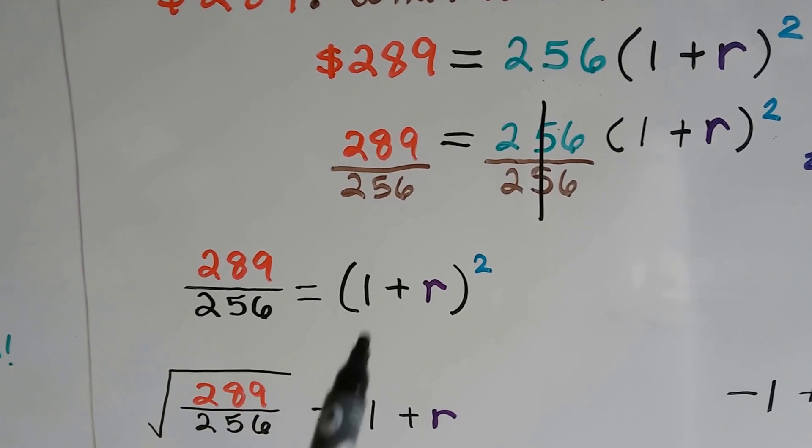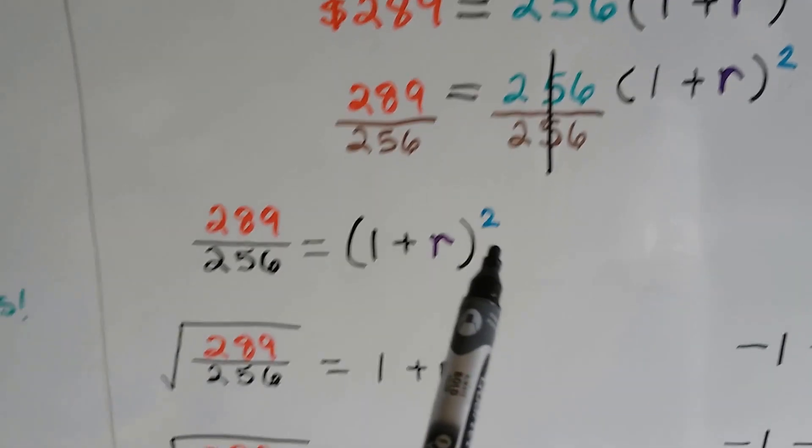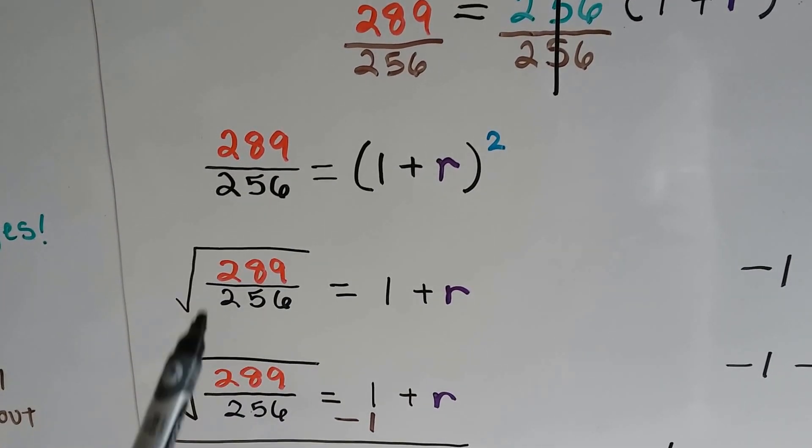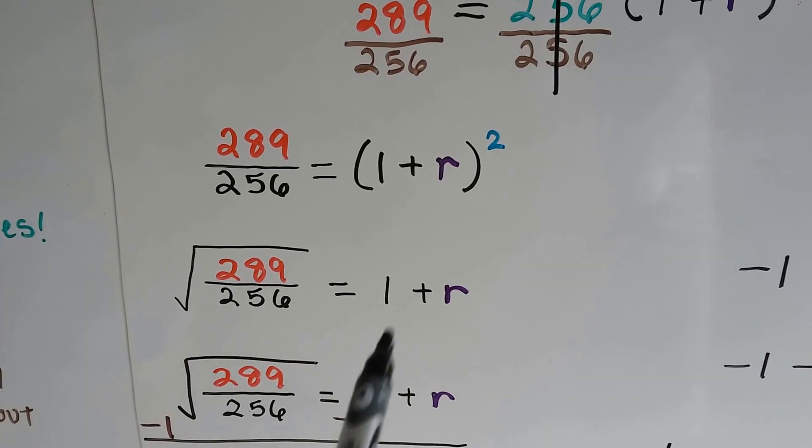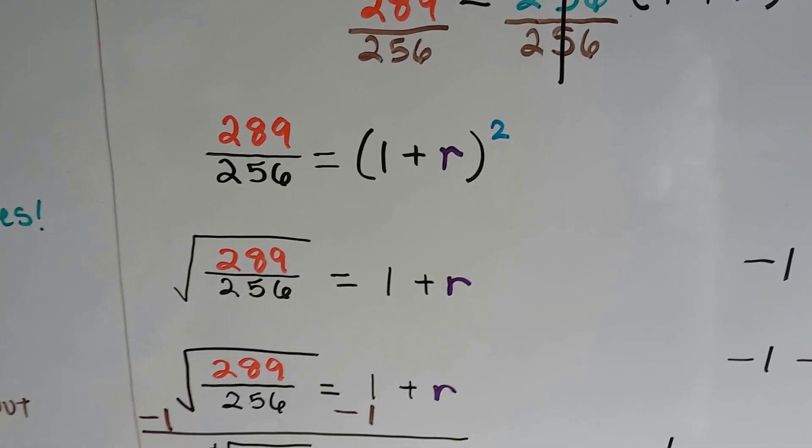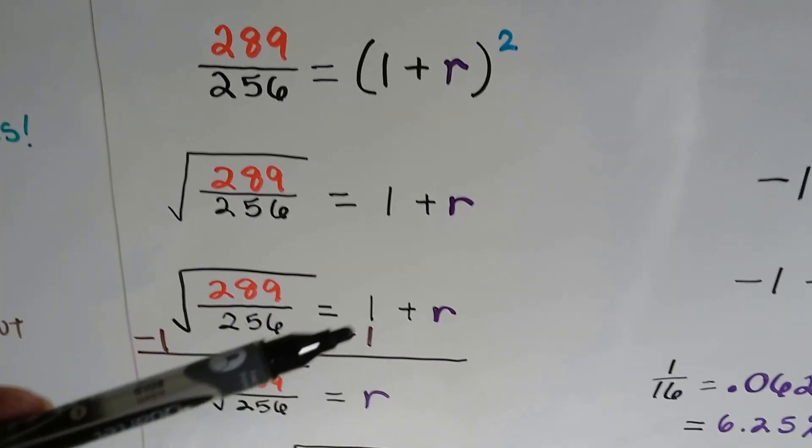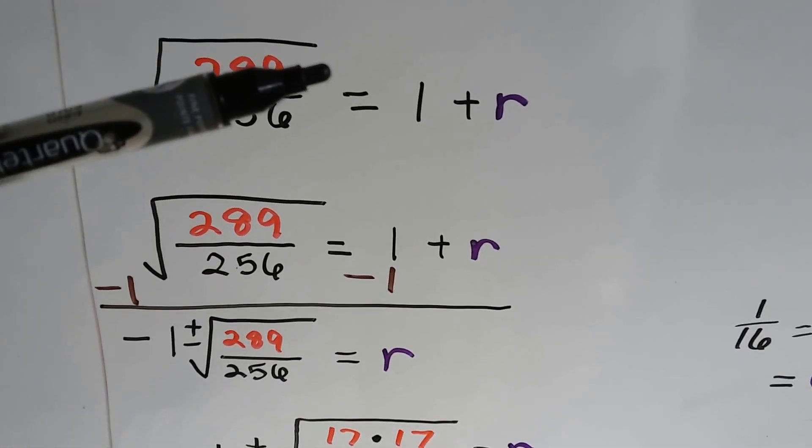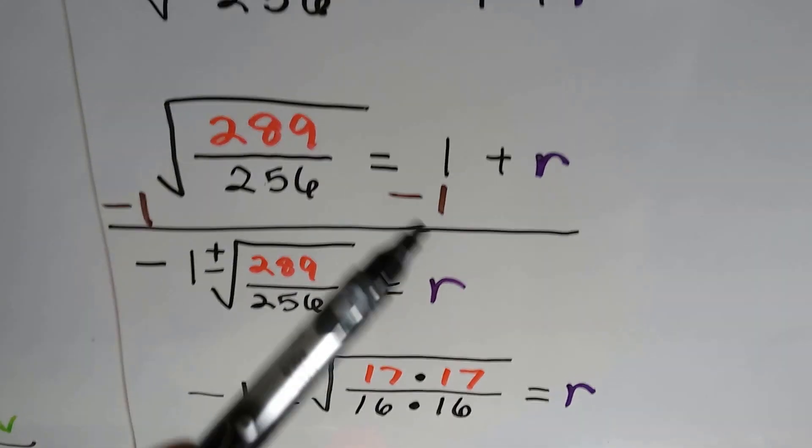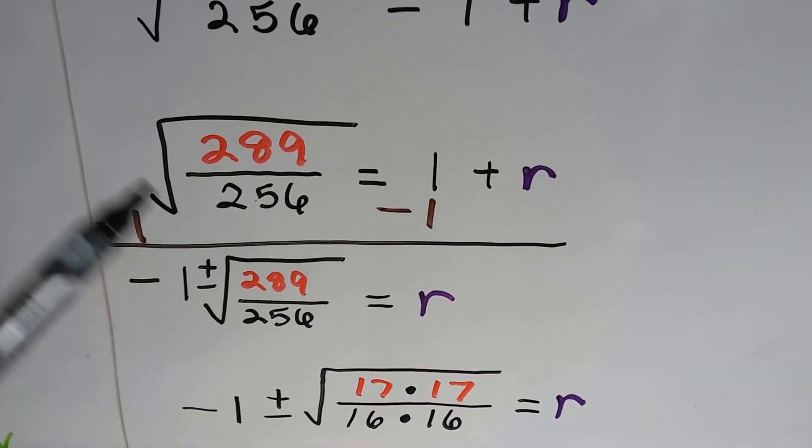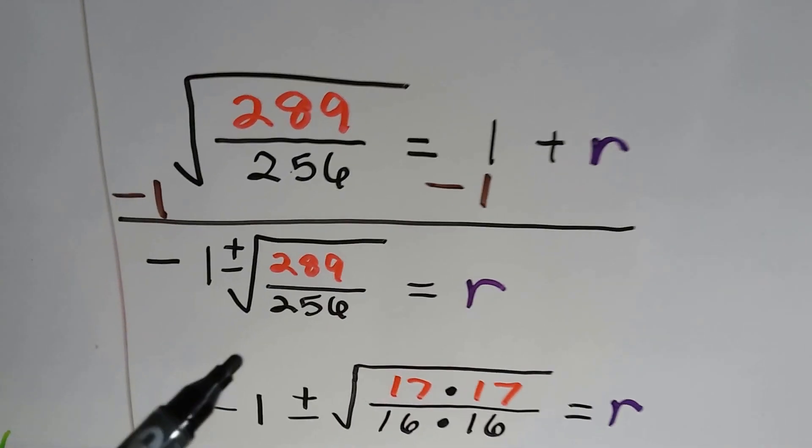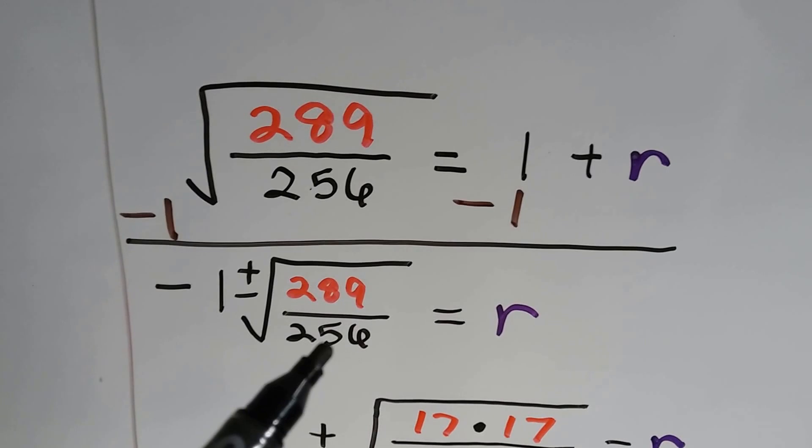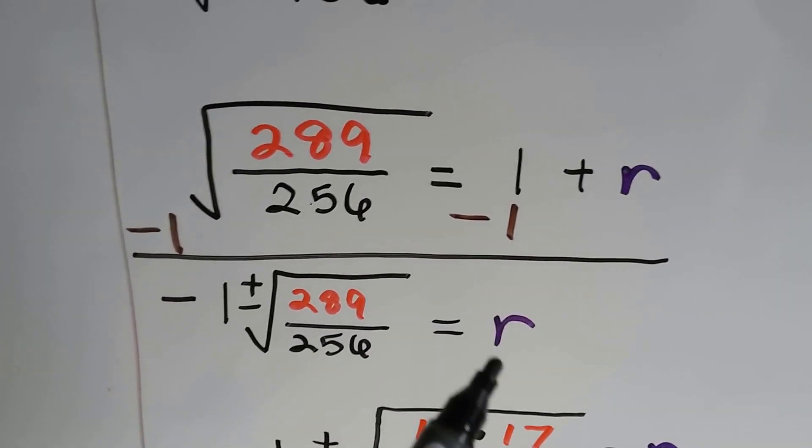So what we're going to do is we're going to divide each side by this 256. Now our equation looks like this. We have a fraction on this side, and this is squared. So we're going to flip the square to this side of the equation by putting a radical sign around these guys and removing that little 2 exponent from this side.